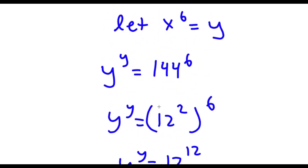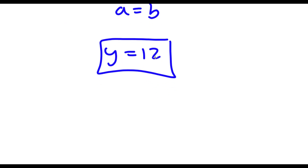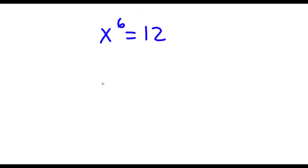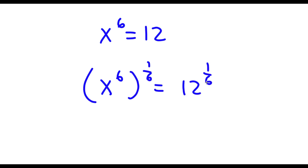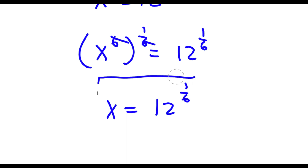However, remember we're not solving for y, we're solving for x. And x to the power of 6 equals y. So now that we know y is 12, this means x to the power of 6 is equal to 12. To solve this, I'm going to take the power of 1 over 6 on both sides. So x to the power of 6 to the power of 1 over 6 equals 12 to the power of 1 over 6. Now 6 times 1 over 6 cancel out, so I'm left with x is equal to 12 to the power of 1 over 6. This is my answer.